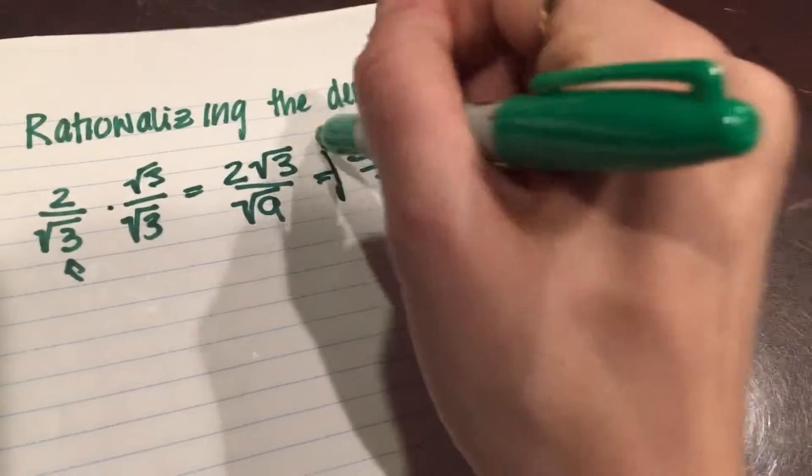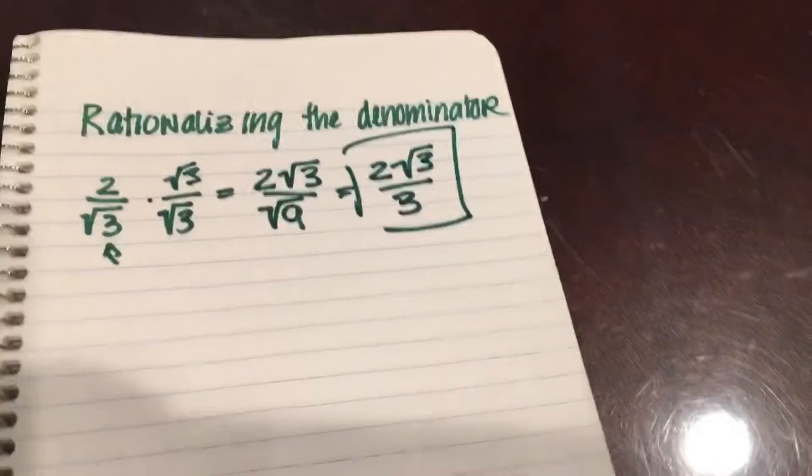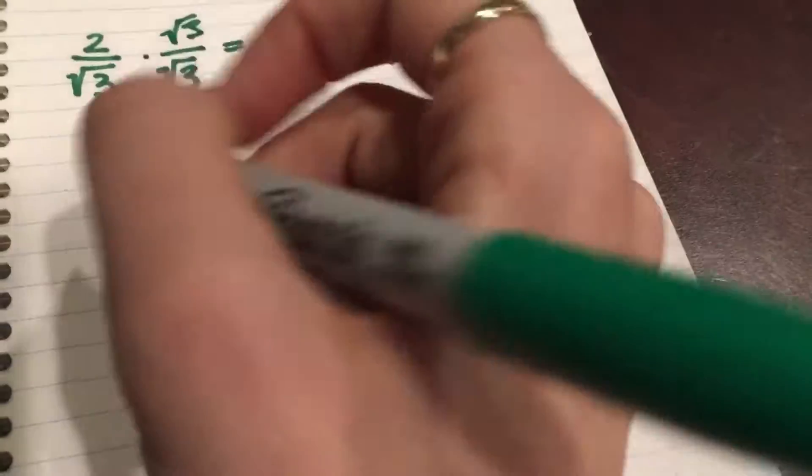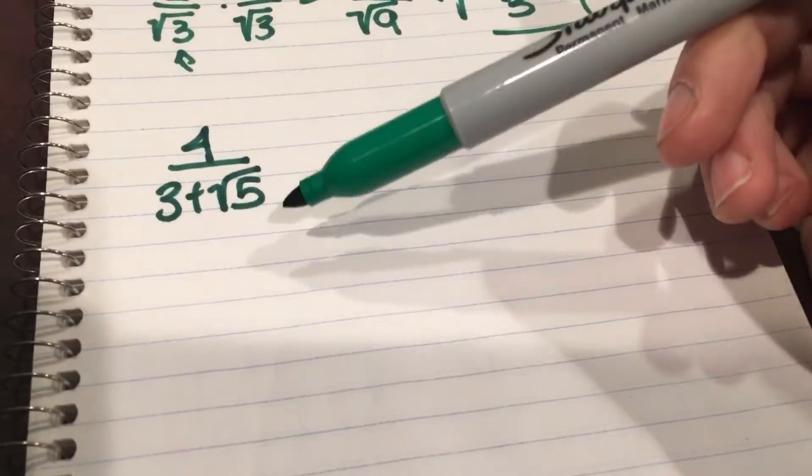Beautiful, we solved it. That's how you do it for stuff that looks like this. Now the other way to rationalize the denominator is when it looks like this. Again, don't ask who made up these rules.